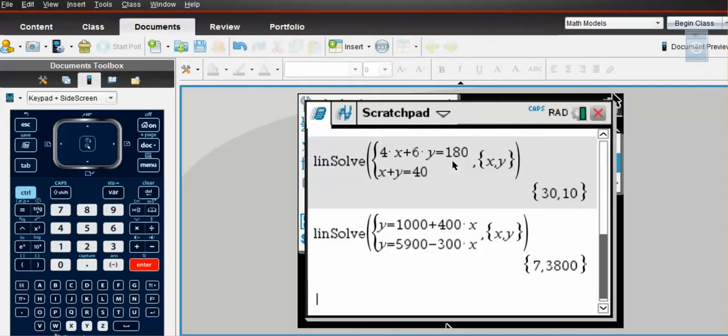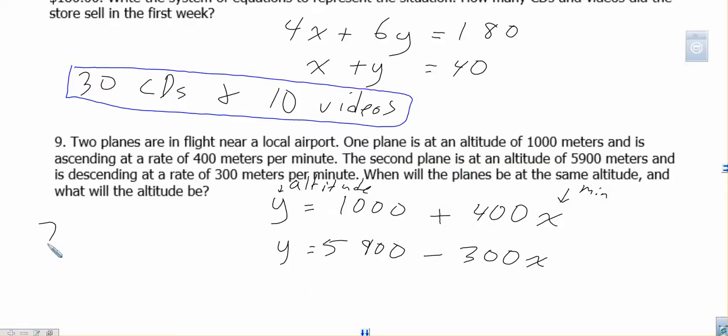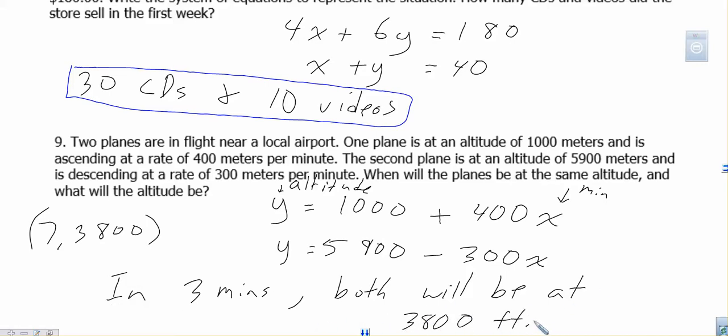So let's go to our calculator and this is the best way to do this. Menu, algebra, solve a system. Two equations with X and Y as our variables. Now here's the great thing: this doesn't have to be in standard form. You can say Y equals 1,000 plus 400X and Y equals 5,900 minus 300X. They don't have to be in the standard form we usually look at. They can be in Y equals form or whatever form. So we get 7 and 3800. Which means 7 minutes. In 7 minutes, both will be at 3800 feet.